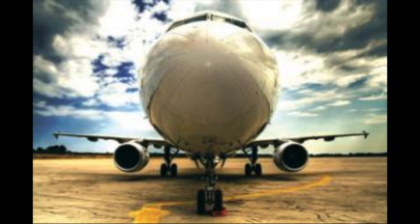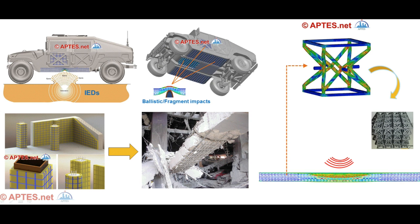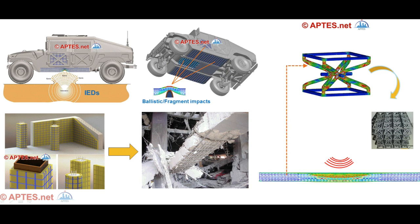For use in the building and construction industry, negative Poisson's ratio materials are being implemented as the core material in sandwich panels. These panels are used in applications where high structural rigidity and low weight are required. Shown here is its use in an armored vehicle.